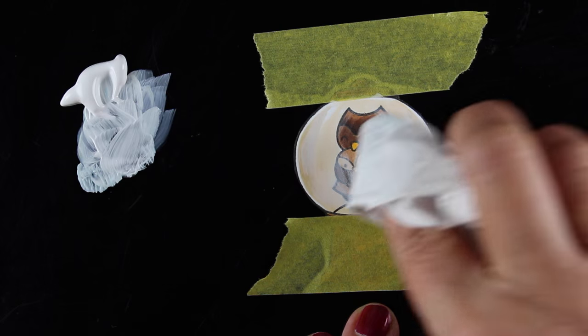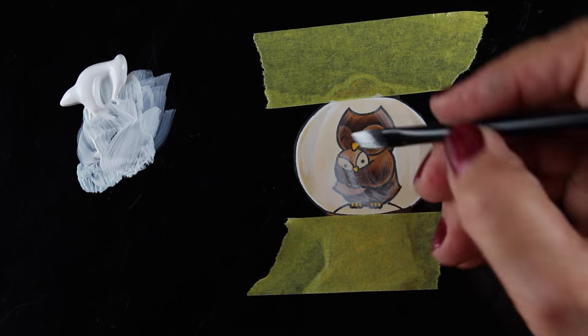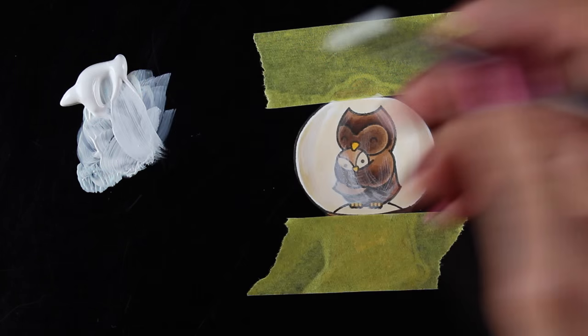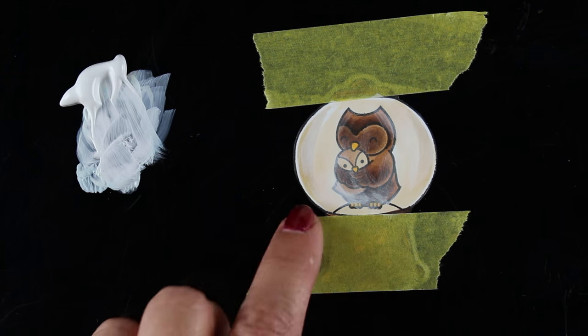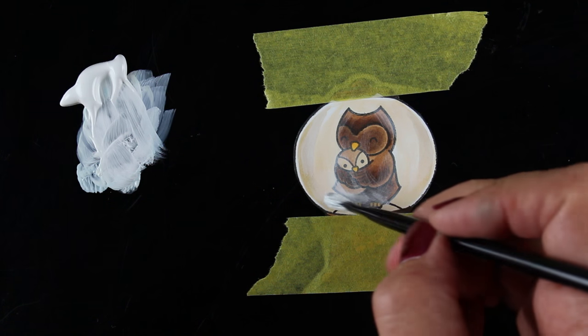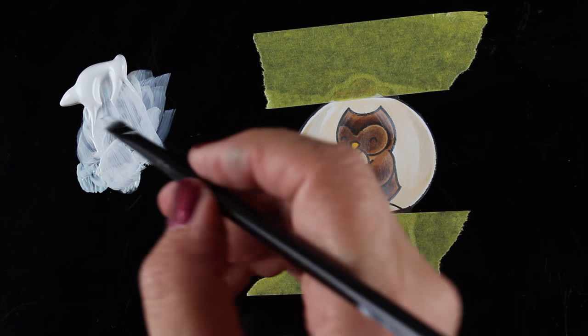You can dab or wipe, just be real careful not to go a different direction than what your brush strokes go. So you want any places that you remove to be removed in the same direction, the same pattern of strokes.